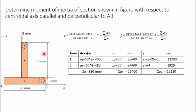x₁ is the distance of the centroid of area one from the y-axis. The total width is 60, so the center is at 30 mm — thus x₁ = 30 mm. Similarly, x₂ is the distance of the centroid of area two from the y-axis, which is also 30 mm.